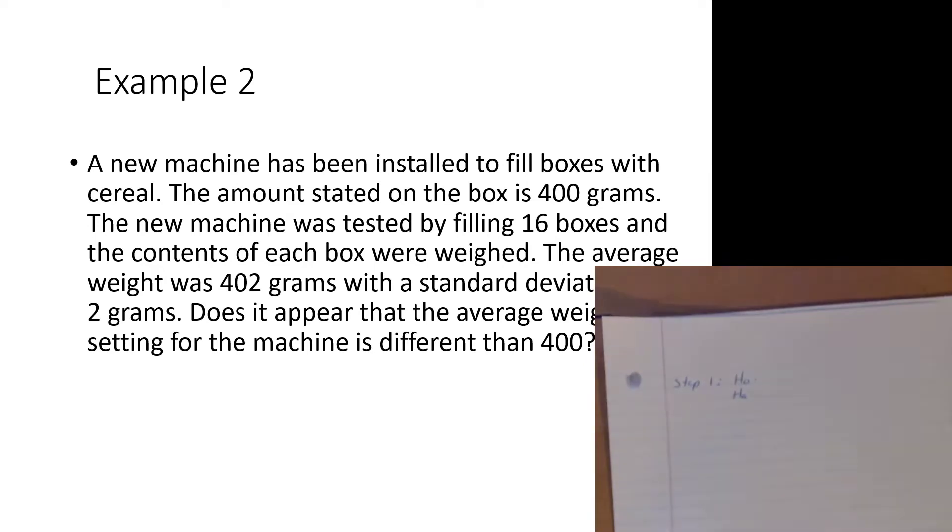We look at our question, because usually the hypothesis is in the question. Does it appear that the average weight setting for the machine is different than 400 grams? Average weight, universal symbol is mu. Different means not equal to. We're equally concerned - we don't want it a lot more than 400 or under 400 either. H0 is the opposite, that it is equal to 400 grams.